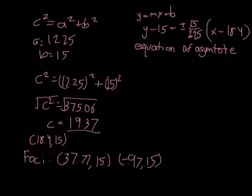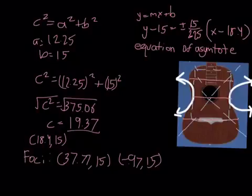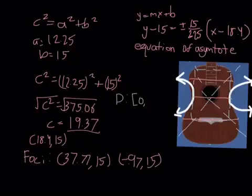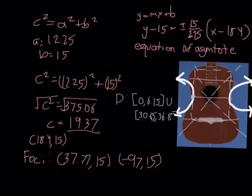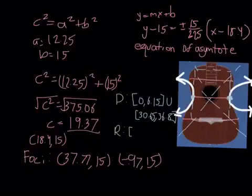The last thing we need to find is our domain and range. The domain is from left to right based off your x values. It would be [0, 6.15] because you're trying to find the point where it stops, and then union [30.65, 36.8] where it starts back up. For your range, it would be from your y values from bottom to top, starting at bracket 0 and going all the way until 21.9 at the top of where your hyperbola ends.